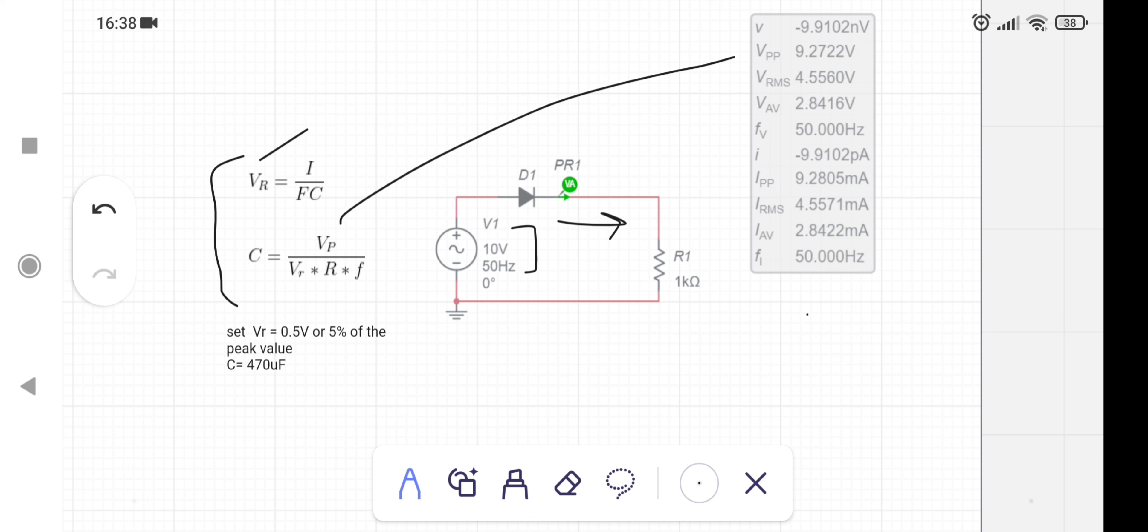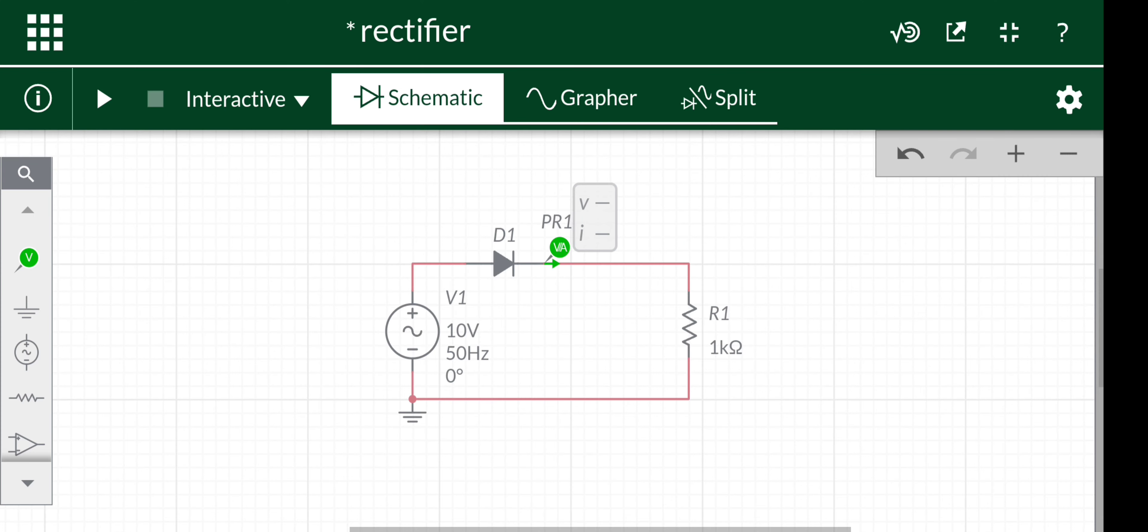After substituting the values, we get C = 470 microfarad. Now let's simulate the circuit and see what we get. This is a half-wave rectifier circuit in Multisim.